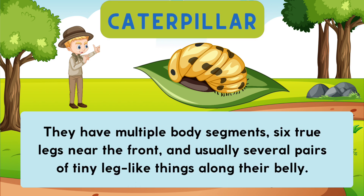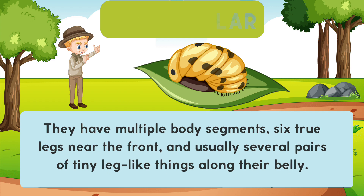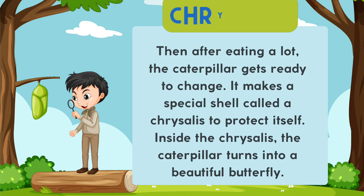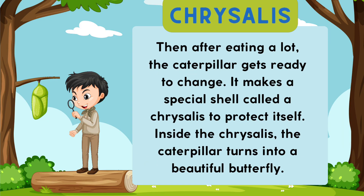They have multiple body segments, six true legs near the front, and usually several pairs of tiny leg-like things along their belly. Then, after eating a lot, the caterpillar gets ready to change.